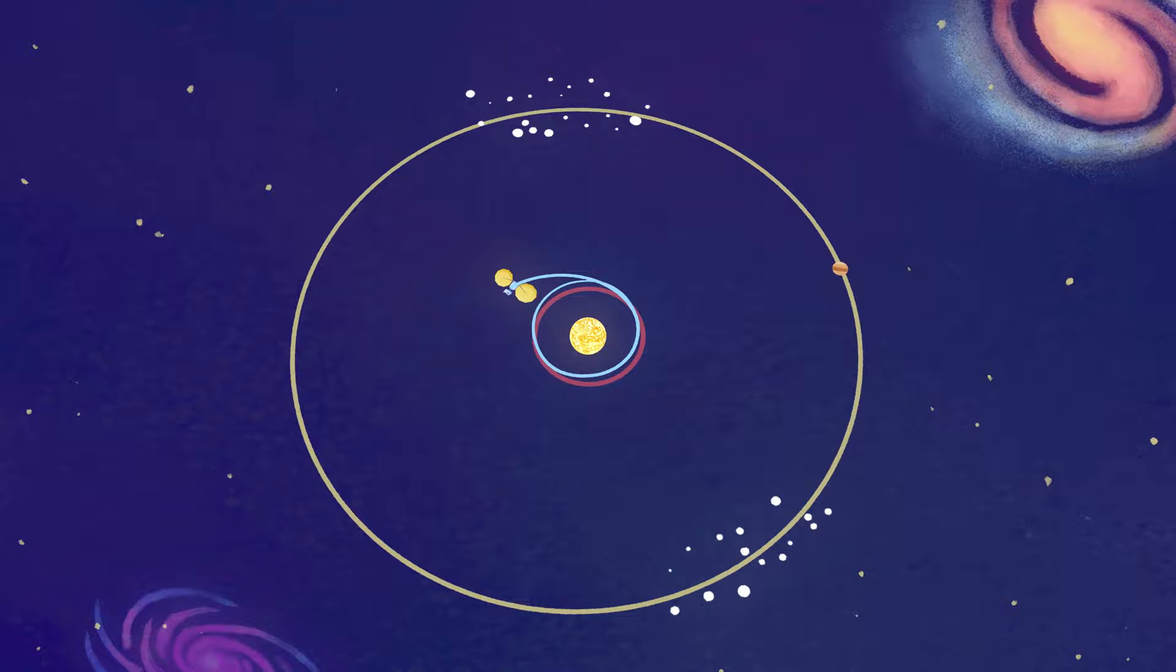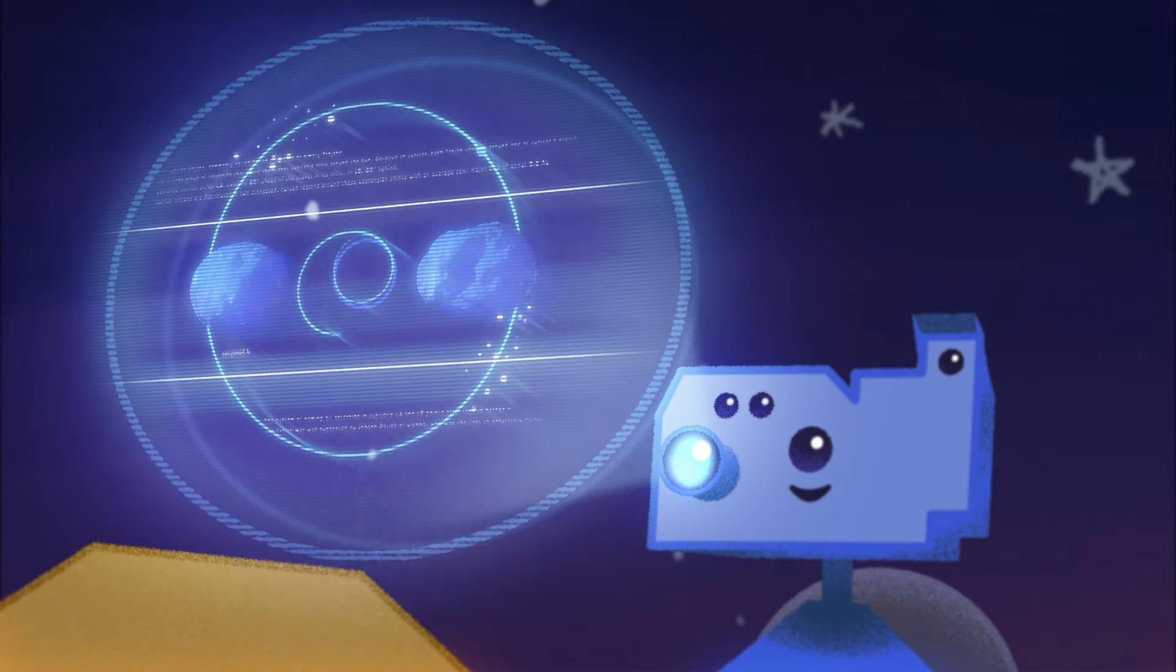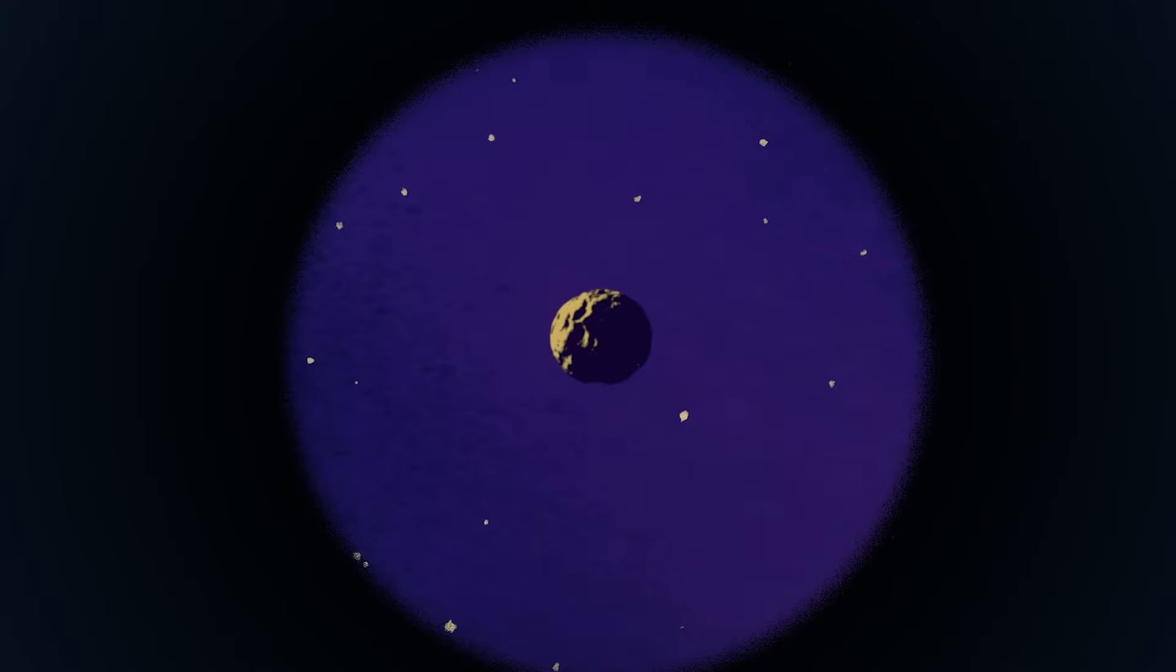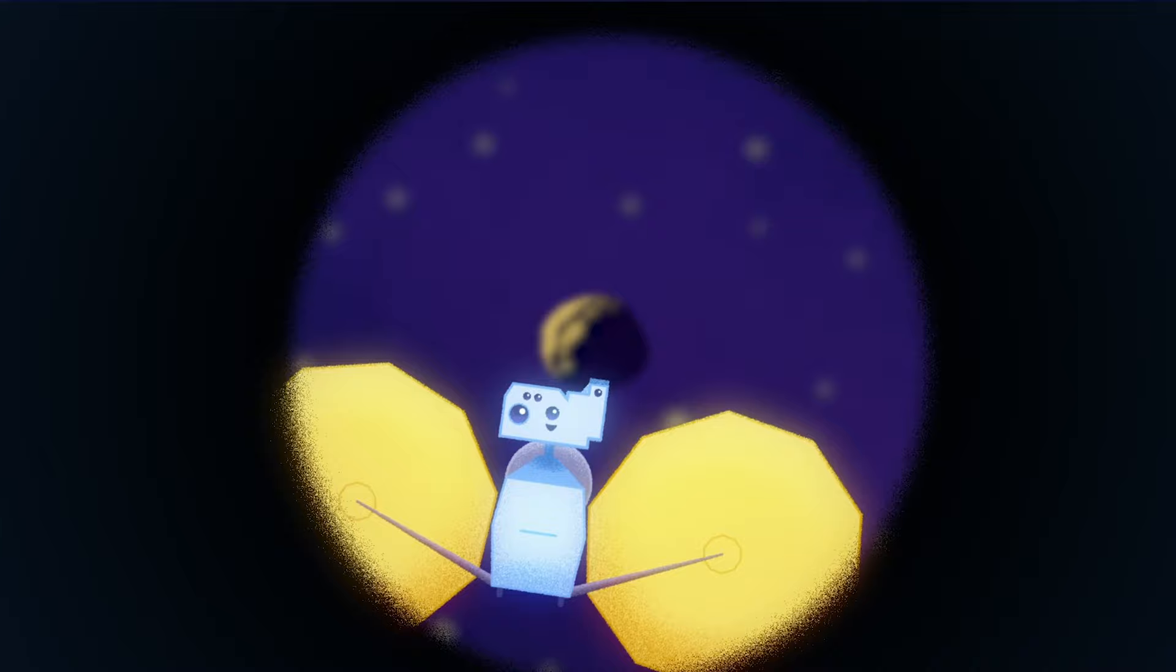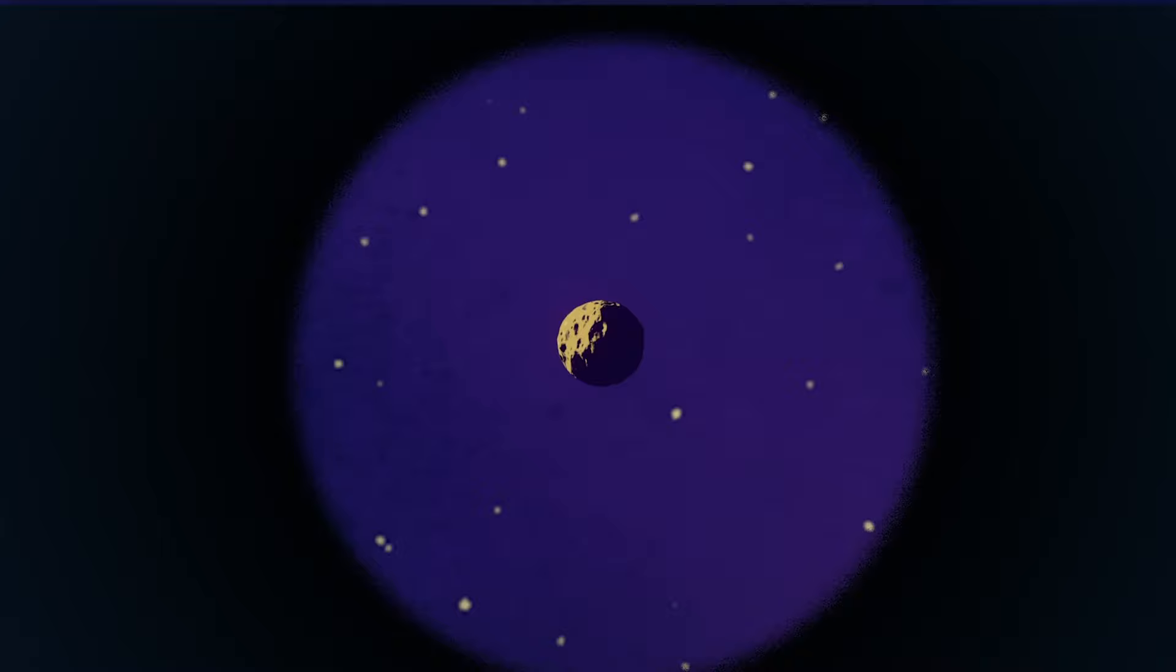Lucy in particular is going to go after the Jupiter Trojans. We're trying to see a type of object that represents and constrains the formation of the outer planets. And you need to go to these Lagrange points in order to see that kind of object.